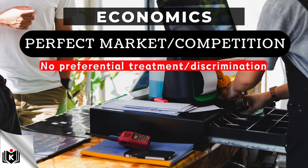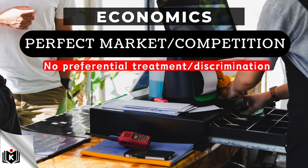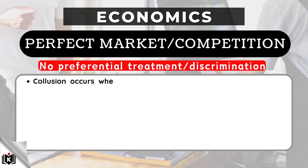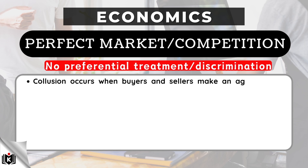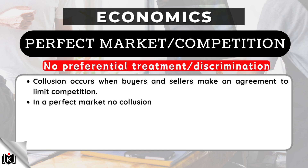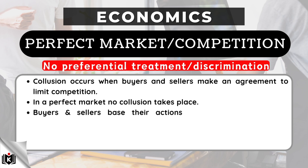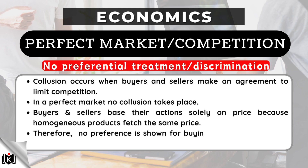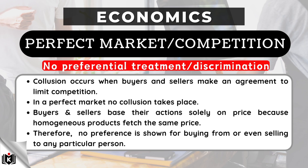In perfect competition, there is also no preferential treatment nor discrimination. Collusion occurs when buyers and sellers make an agreement to limit competition. In a perfect market, no collusion takes place. Buyers and sellers base their actions solely on price, because homogeneous products fetch the same price. Therefore, no preference is shown for buying from or selling to any particular person.